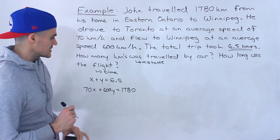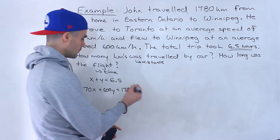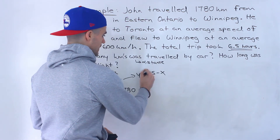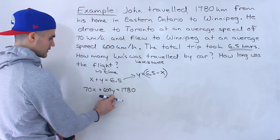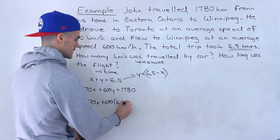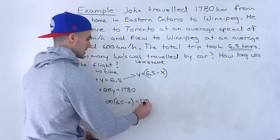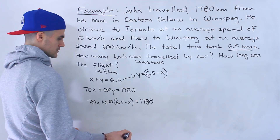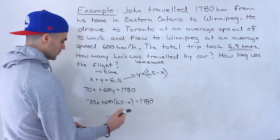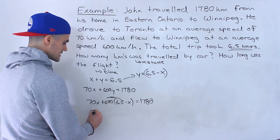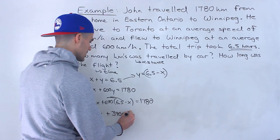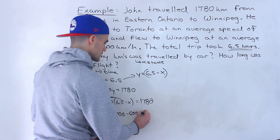From the time-variable system of equations, I'm going to isolate for y from the first equation: y equals 6.5 minus x. Then I'll substitute that into the second equation, giving: 70x plus 600 times (6.5 minus x) equals 1,780. Distributing, that becomes 70x plus 3,900 minus 600x equals 1,780.